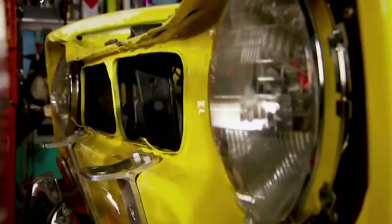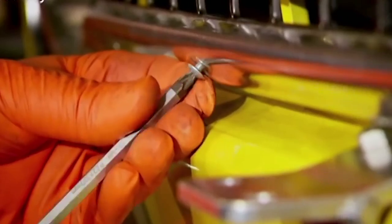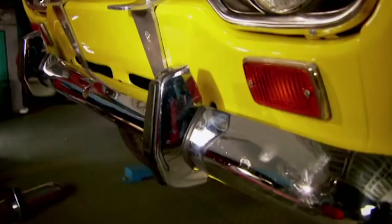And now to give the Mark 1 its face. I re-sprayed the dog bone grill in satin black. It helps to make the front of the car look factory fresh.